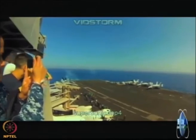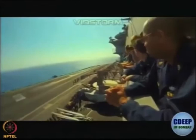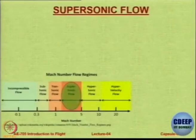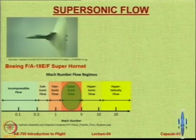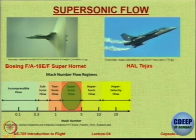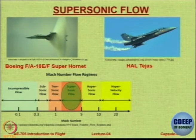This is called a supersonic flyby and the clouds you saw on the plane were basically condensation. Supersonic flow is more than around Mach 1.2 up to around Mach 4. Two examples of aircraft which can fly supersonic are our own HAL Tejas and the Boeing F/A-18 Super Hornet, which is the one that you saw in the flyby.